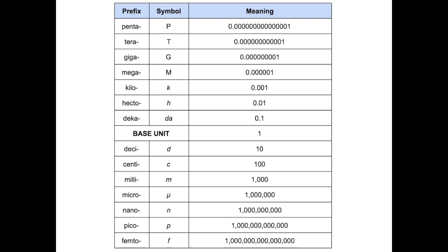So the base unit, meter, is one. If one meter were converted to kilometers, it'd be 0.001. So it's a ratio of one meter to 0.001 kilometers.